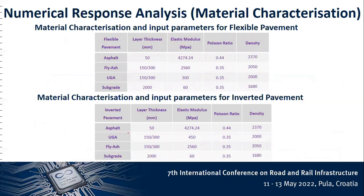Looking at the material characterization: as we all know with regards to numerical modeling, we need to get the material characterization right. We have material characterization for the flexible pavement and also for the inverted pavement. The material characterization for the fly ash is from a laboratory test in which fly ash has been mixed at 18% to boost the fly ash available here in South Africa. We have the layer thickness, elastic modulus, Poisson's ratio, and density as the material characterization factors needed in the numerical model.